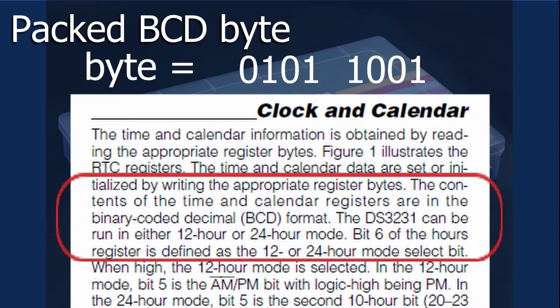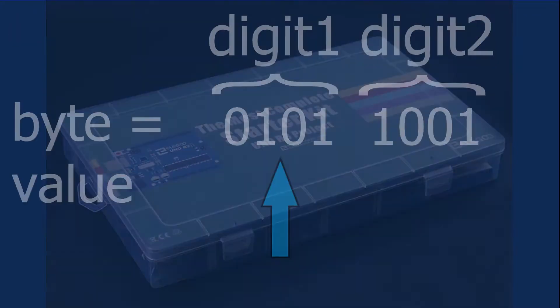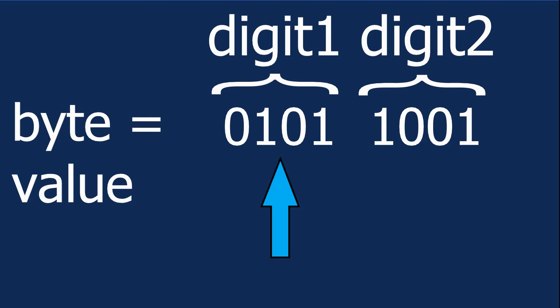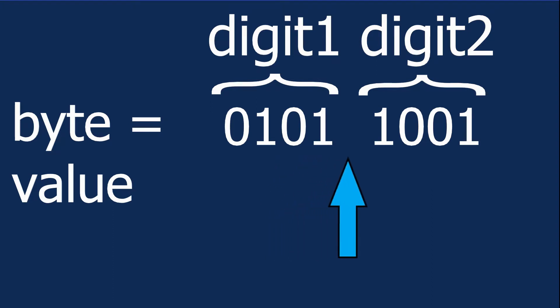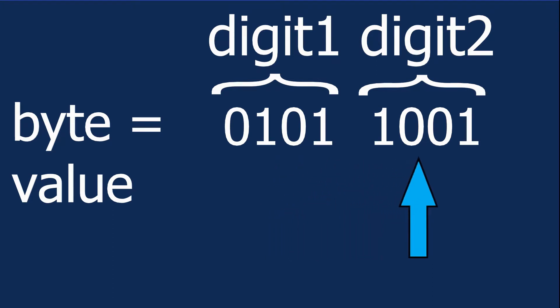The DS3231 stores the time and dates as a packed encoded BCD byte, which basically means that each nibble or each four bits contains a separate decimal value.